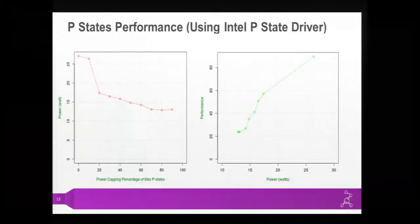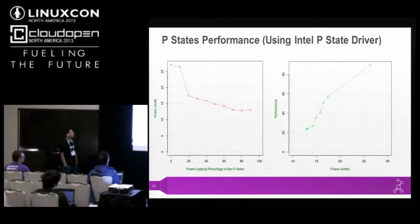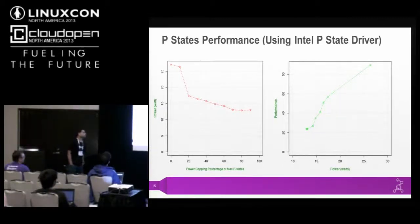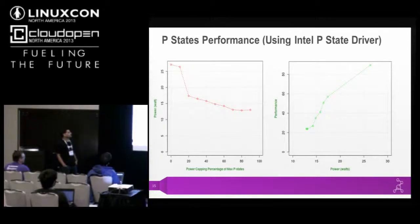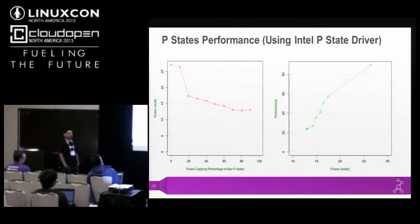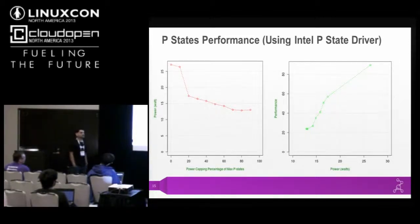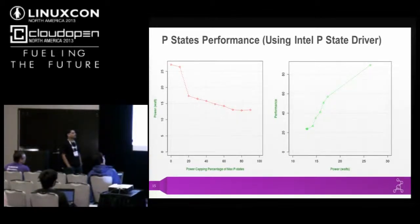Let us look at P state performance. The left-hand graph shows power versus the max limited P state. As you limit the P states, the power drops. There is a big drop at the point where turbo disengages, because that is where the OS takes direct control. After that the drop is very linear. The right-hand graph shows OpenSSL speed test performance versus the P state using the P state driver. As you limit power, performance drops, and the drop is pretty linear.